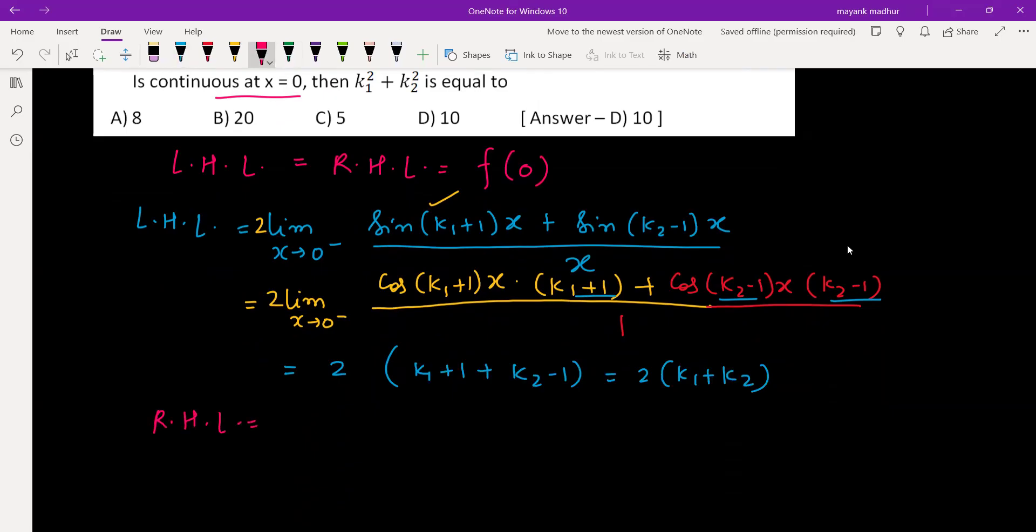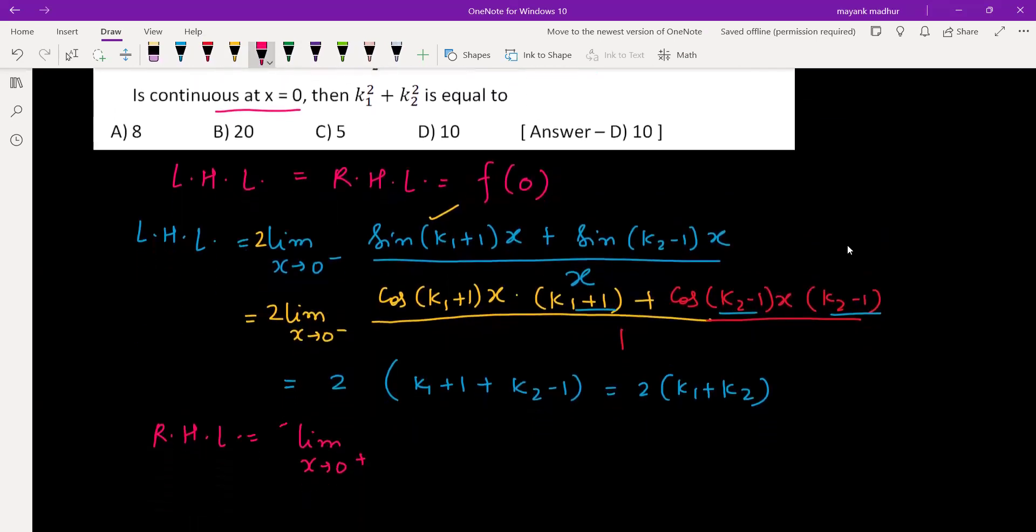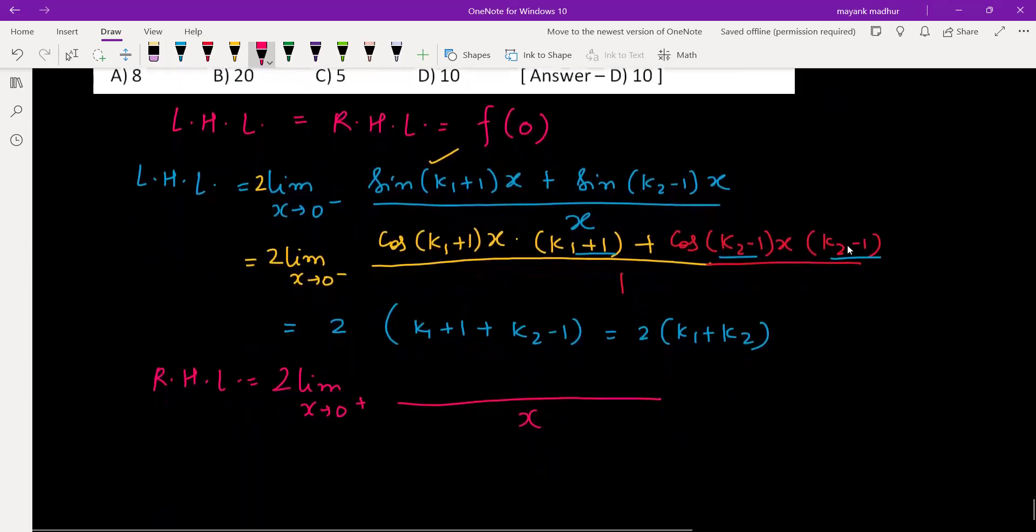RHL is limit x tends to 0 plus, and we have (2/x) times log((2+k₁x)/(2+k₂x)). We have 2 in multiplication, so let's take it outside. We have a property in log that log(a/b) is log(a) - log(b). Using that property, we can write it as log(2+k₁x) - log(2+k₂x).